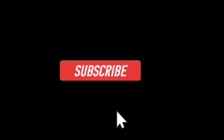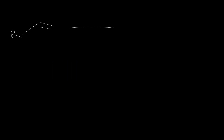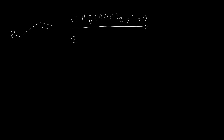In this video, I'm going to explain oxymercuration and alkoxymercuration reactions. Here is the general equation for the oxymercuration reaction. This reaction has two steps. In the first step, mercury acetate and water react with alkene, and in the second step, sodium borohydride is used as a reducing agent. In the product, OH will be on the more substituted carbon and H will be on the less substituted carbon.